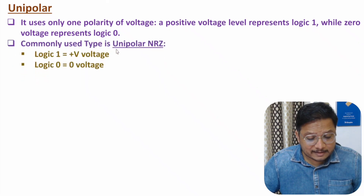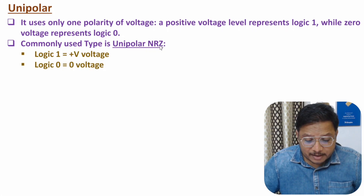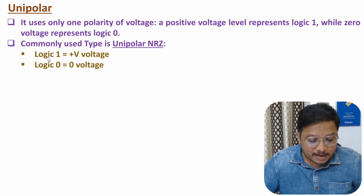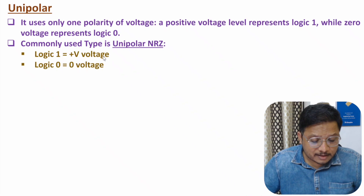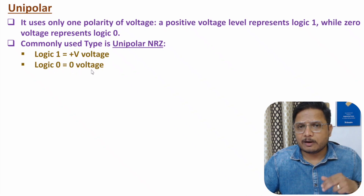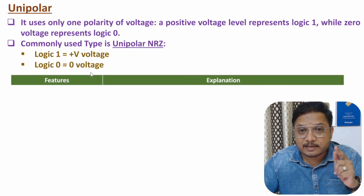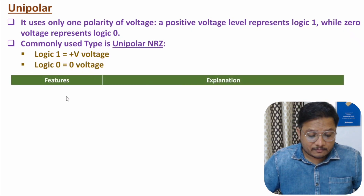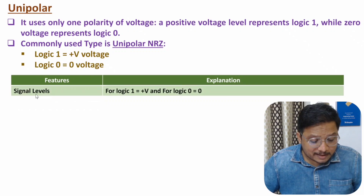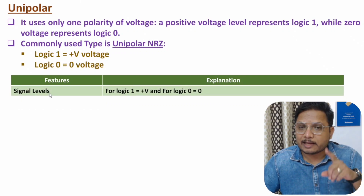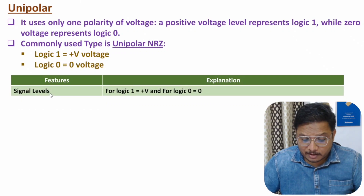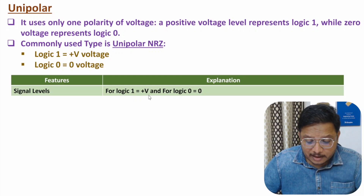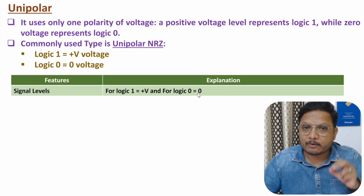A popular category is unipolar NRZ, meaning unipolar not return to zero. In unipolar NRZ, we will be having logic one for plus V voltage and logic zero for zero voltage. Now I will discuss the features of unipolar. First, you need to understand how many signal levels are there — here we have only one signal level. For logic one we have plus V voltage, and for logic zero we have zero voltage.